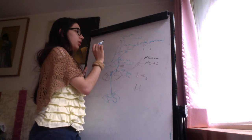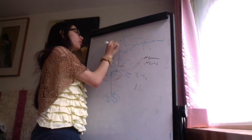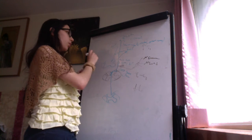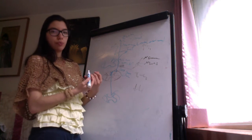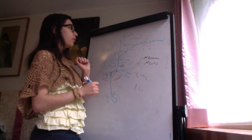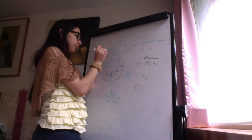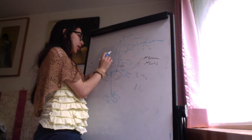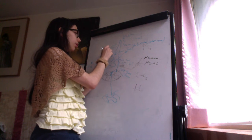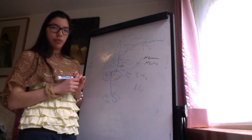The neurons of the paravermal hemisphere exit the cerebellum through the superior cerebellar peduncles, cross in the decussation of the superior cerebellar peduncles, and arrive at the red nucleus. The axons of the fastigial nucleus descend through the inferior cerebellar peduncles and go to the reticular formation and vestibular nuclei. The vestibular nuclei are at the level of the medulla.